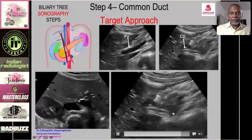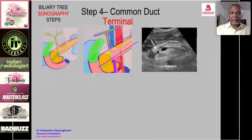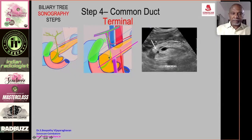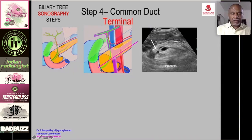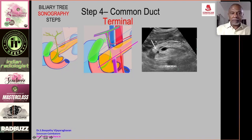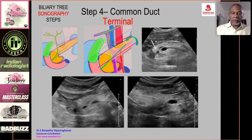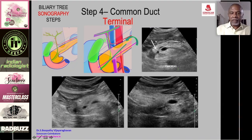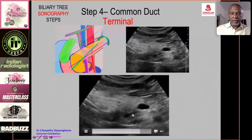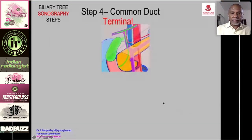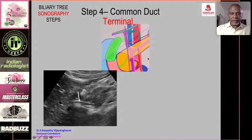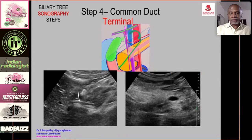For the terminal part of the common duct: the duct runs vertically initially, then the trajectory through the pancreas becomes transverse to open into the ampulla. If you continue the oblique scan, you will fail to see this terminal portion. When doing a transverse scan of the pancreas, the common duct is seen as a dot in cross-section. You must then tilt the transducer obliquely to visualize the terminal end. Alternatively, from the common duct you can rotate the transducer more transversely to see the terminal portion.